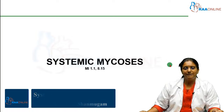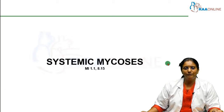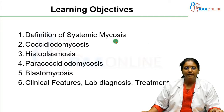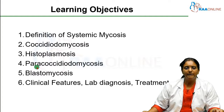This session is going to be on systemic mycosis. What are the learning objectives for the session? The definition of systemic mycosis, and the different types of systemic mycosis which are very important: coccidioidomycosis, histoplasmosis, paracoccidioidomycosis, and blastomycosis.